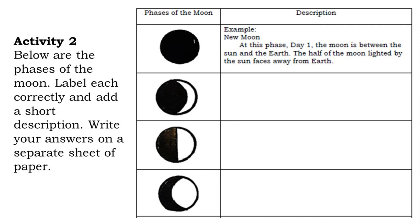Activity 2: Below are the phases of the moon. Label each correctly and add a short description. Write your answers on a separate sheet of paper. Example — New Moon: At this phase, day 1, the moon is between the Sun and the Earth. The half of the moon lighted by the Sun faces away from Earth.